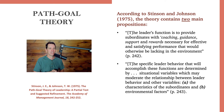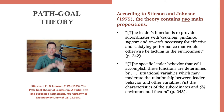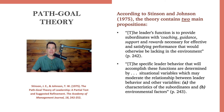The second proposition is that the specific leader behavior that will accomplish these functions is determined by the situational variables, which may moderate the relationship between the leader behavior and other variables: the characteristics of the subordinates, and the environmental factors. The leader decides on their behavior based upon what's going on with subordinates and the environmental factors. The leader reads the situation and then decides how to respond — that's why it's a situational model.